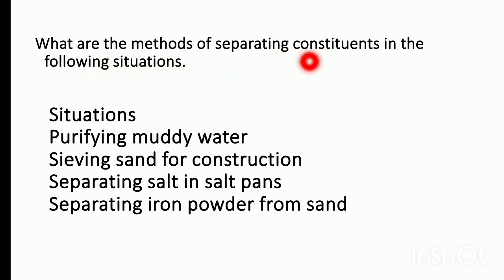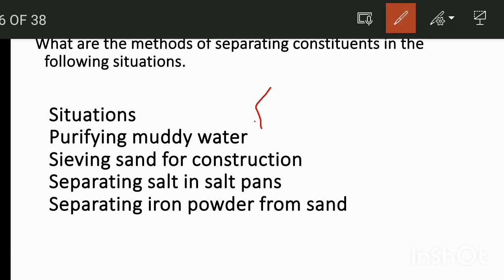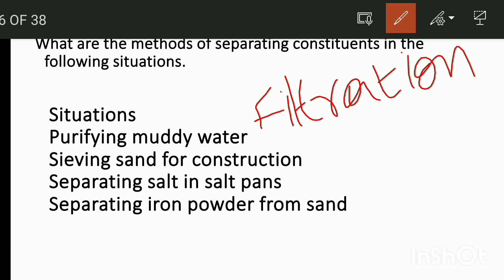What are the methods of separating constituents in the following situations? The ingredients are two types of molecules. Purifying muddy water, sieving sand for construction, separating salt in salt pans, separating iron powder from sand. The method for purifying muddy water is filtration using filter paper.